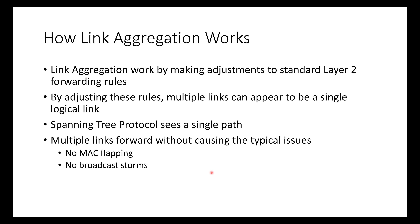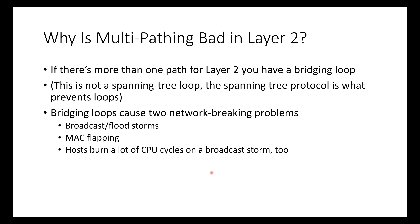So how does link aggregation actually work? It works by making adjustments to some of the standard layer two forwarding rules. By adjusting these rules, we can make multiple links appear to be a single logical link, and spanning tree sees a single path — multiple links without causing the typical issues you get with multiple active paths. So there's no MAC flapping issues, no broadcast storms, etc.